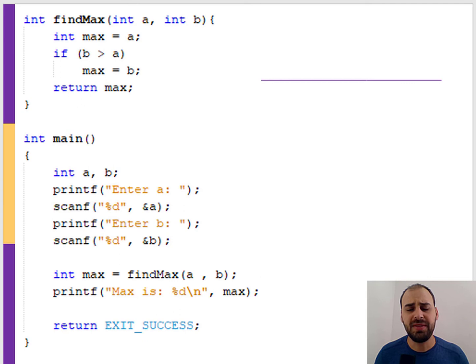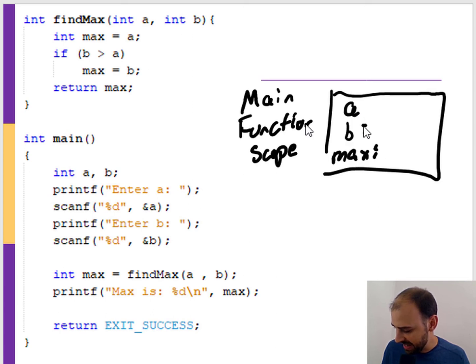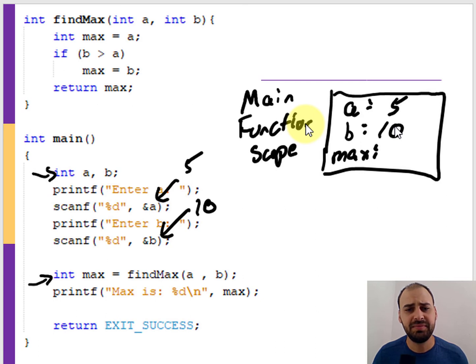Following up on a previous concept, the way we want to look at this is remembering that we've got our main function scope, where we have a, b, and max - those are all declared in the main function scope. Let's imagine, for the sake of argument, that the user enters 5 for a and 10 for b. We're going to initialize those as 5 and 10 based on the scanf function.